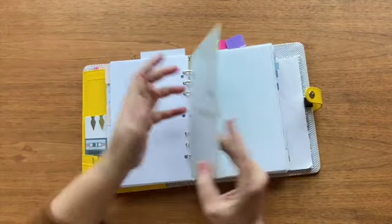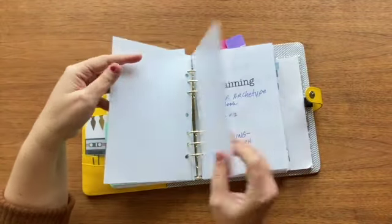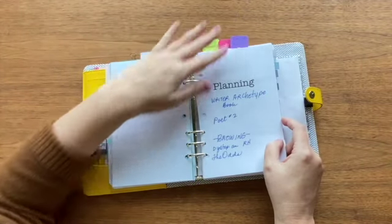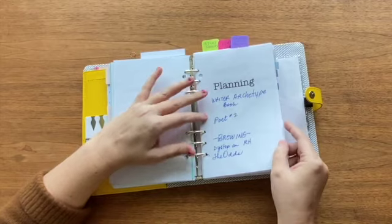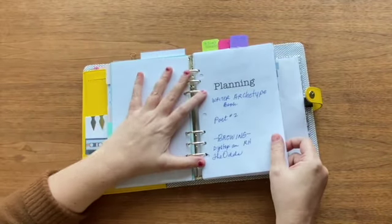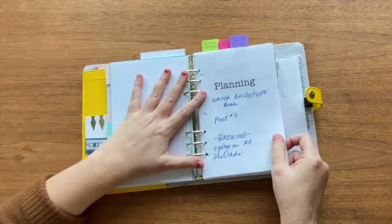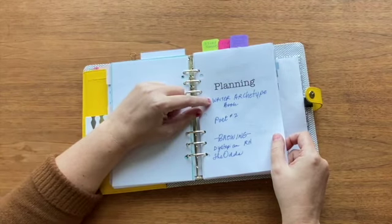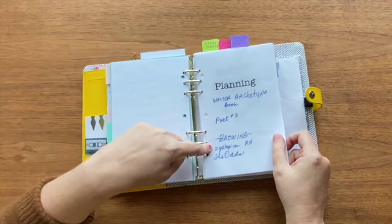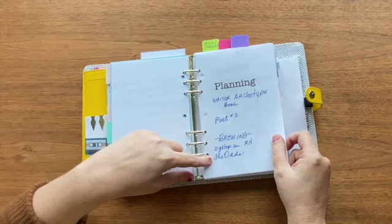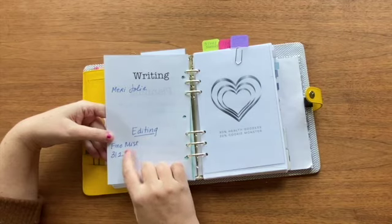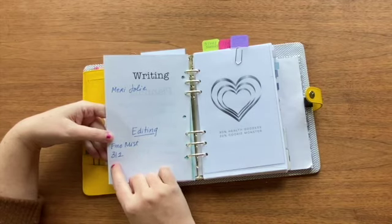And this is the idea section. Okay. I have some, these are laminated. So dry erase. If I just want to take notes, these are the books I have in planning stage right now. Actually have pages that say brewing and editing, but I'm using them. You'll see in a minute as dividers cause I needed them. I should have used these. So I have, I'm planning a writer archetype book and a poet number two, I'm brewing on a dystopian, a romance novel and a middle grade called the odds. I'm writing Mary Jolie and I am editing a YA novel called fine mist and one called three 12.